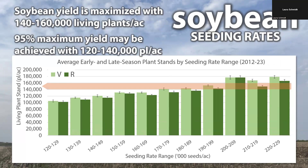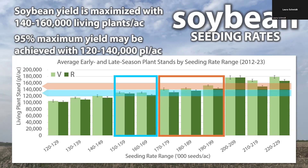What does that mean for actual living plant stands in the field? From extensive small plot research in Manitoba, we know that soybean yield is maximized at 140 to 160,000 living plants per acre, highlighted here in orange. On average, we need about 170 to 190,000 seeds per acre to achieve that living plant stand based on our data. On the other hand, highlighted in blue, 120 to 140,000 plants per acre is still within 95% of maximum soybean yield in that research, and we are consistently getting plant stands in that range with seeding rates of 150 to 160,000 seeds per acre. Keep this in mind as we move to the yields of these different seeding rates.